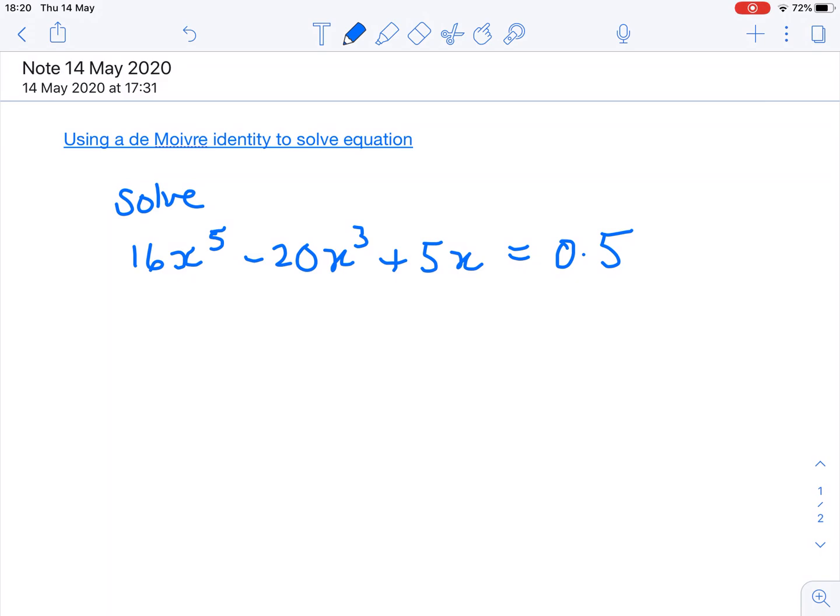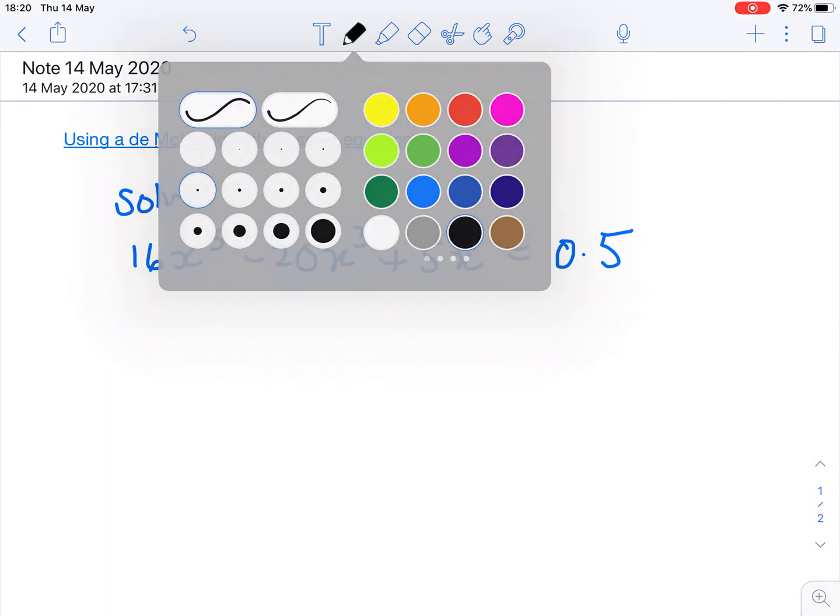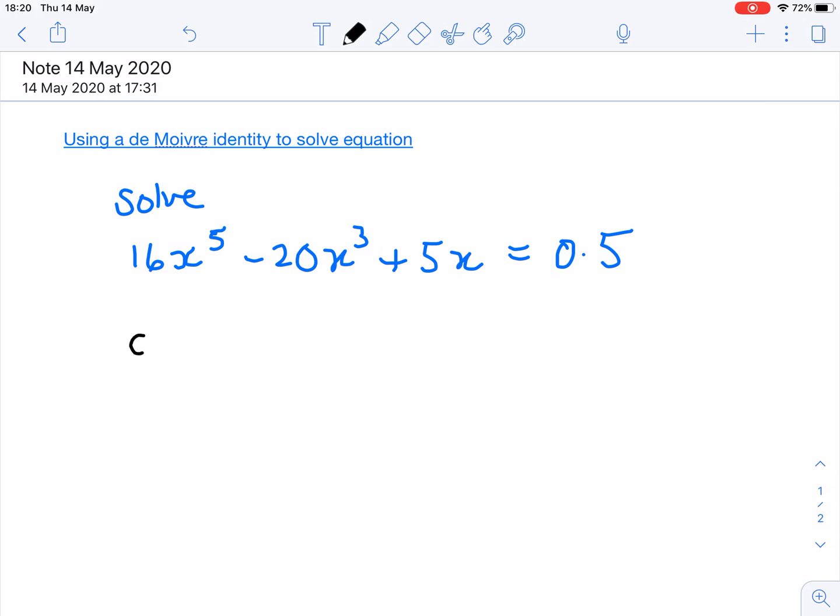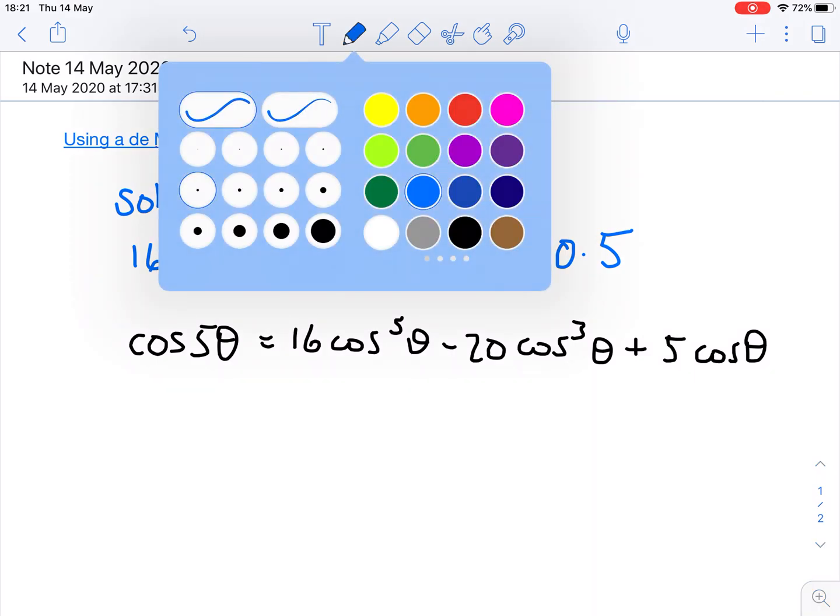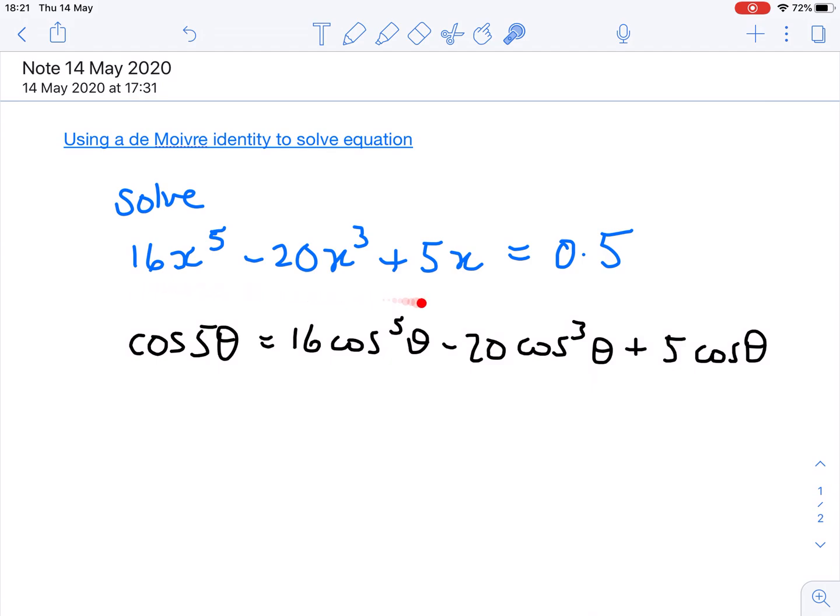Equations with x^5 are not terribly easy to solve. From the last video, we know that we can write cos(5θ) as 16cos^5(θ) - 20cos^3(θ) + 5cos(θ). I've chosen this equation quite deliberately. I have the same coefficients and powers in the left-hand side of the equation as I have in this side of the identity.